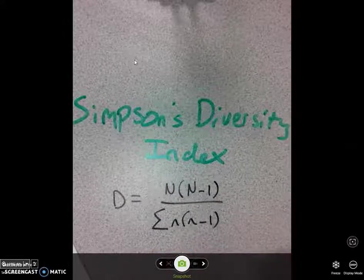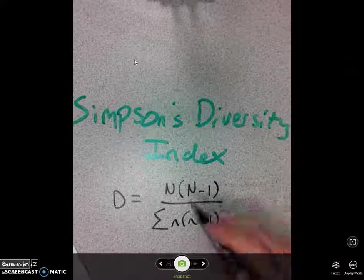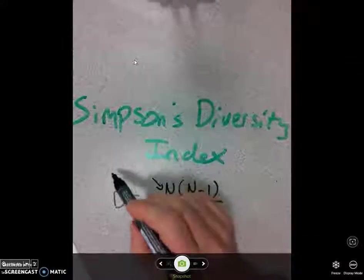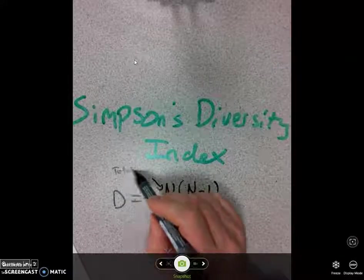Let's be clear on what all the various bits are. So you've got two n's here, big N and little n. Now big N is the total number of all individuals, that's in all species.